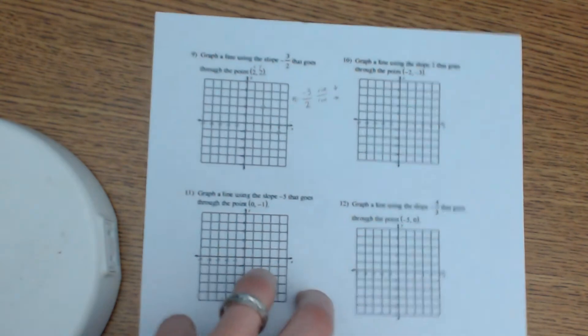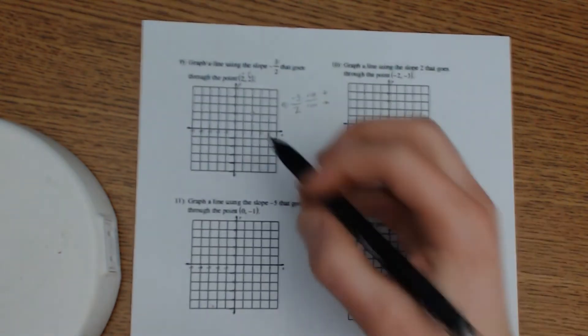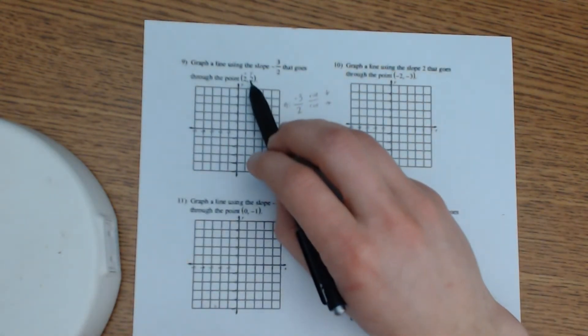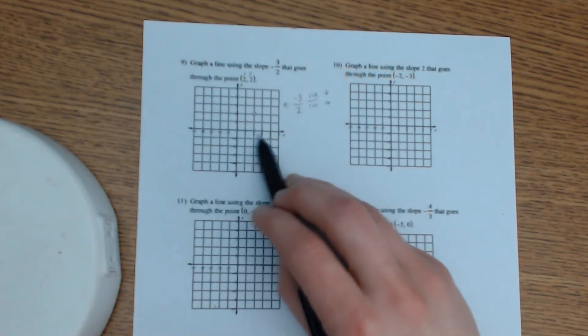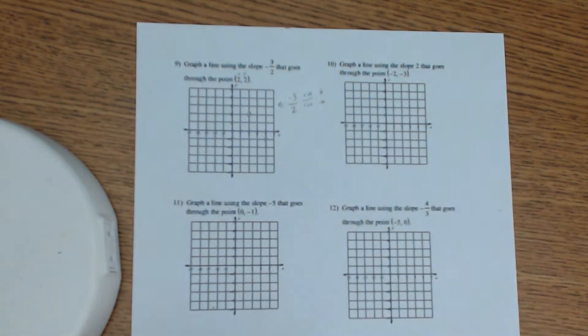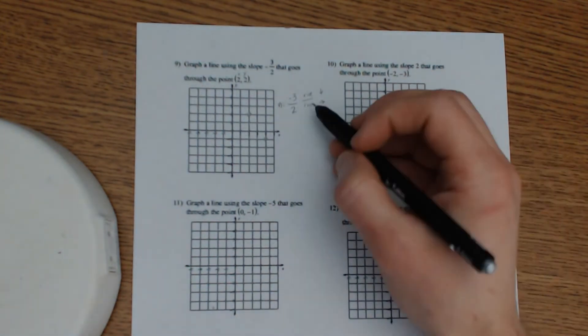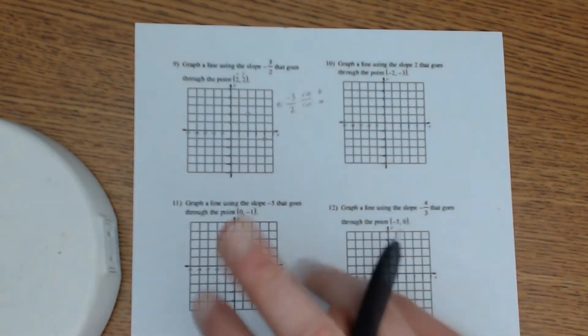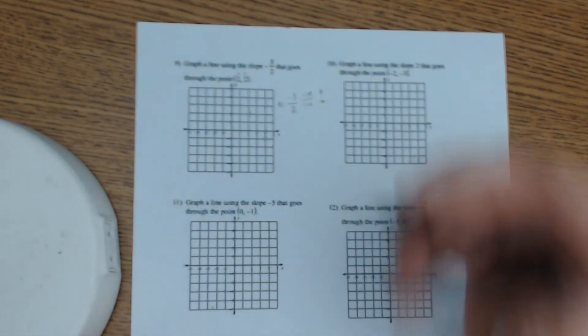Take note, this is the part that could be confusing sometimes. When we're doing an ordered pair, we do the x first, which is horizontal, and then we go up. With slope, we're doing the up and down, our rise first, and then after that, we're doing the horizontal run. So it's kind of flip-flops. You have to be very careful you don't mix those up.